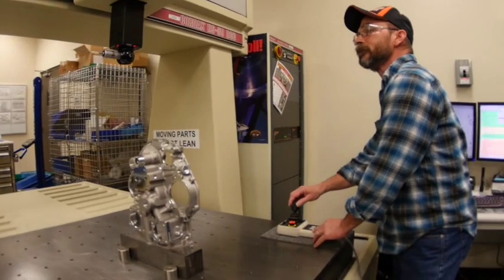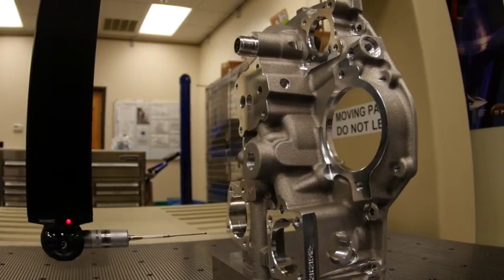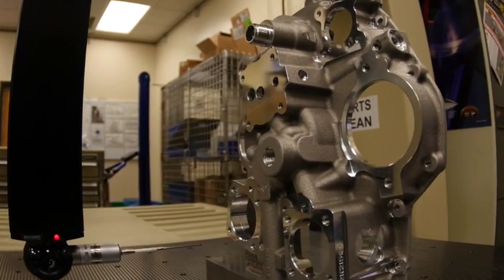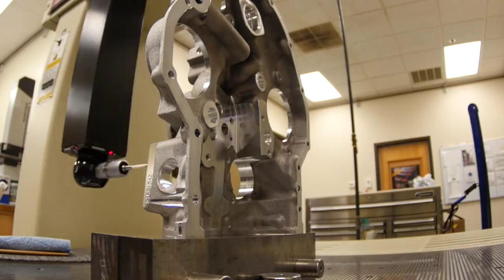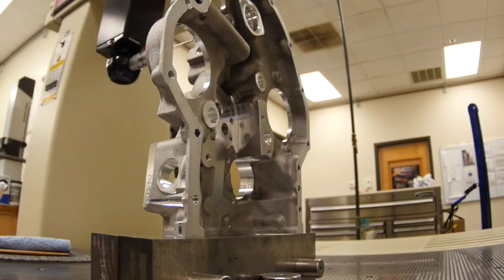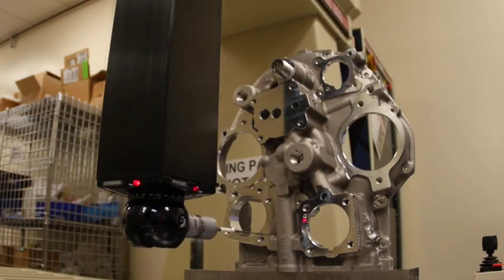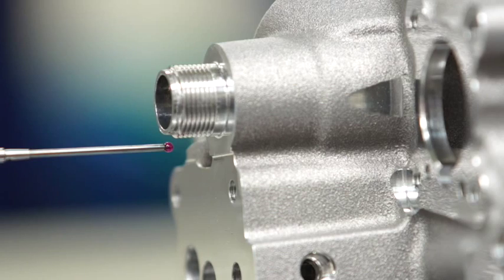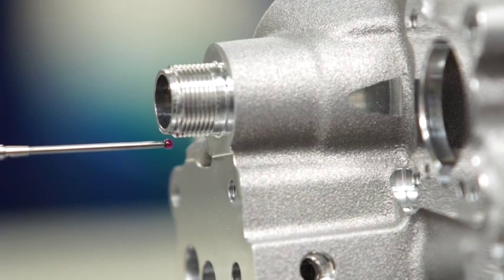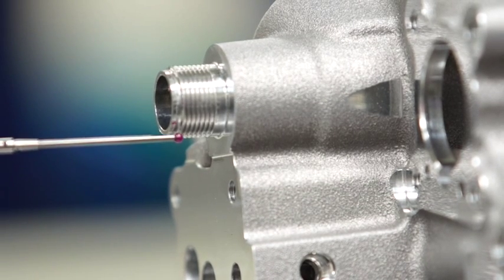The coordinate measuring machines represent another example of Lycoming's continuous effort to maintain a high level of quality control. Parts go to this room for further evaluation and measurement, where they are placed in a coordinate measuring machine with a margin of error of plus or minus two ten-thousandths of an inch. That's smaller in diameter than a single strand of human hair.